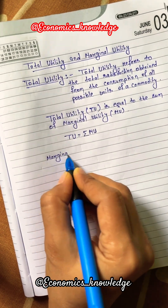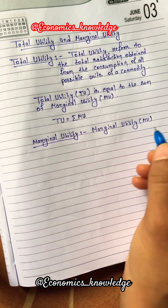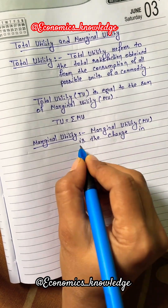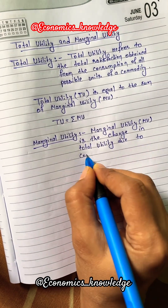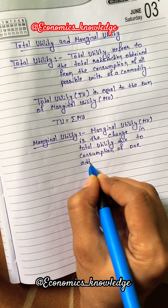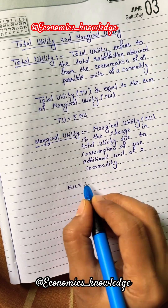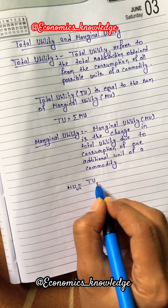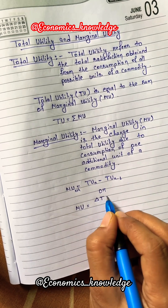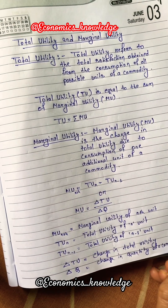Now let's see what is marginal utility. Marginal utility is the change in total utility due to consumption of one additional unit of a commodity. There are two important formulas of marginal utility: MU(n) = TU(n) − TU(n−1), or MU = change in total utility divided by change in quantity of a commodity.